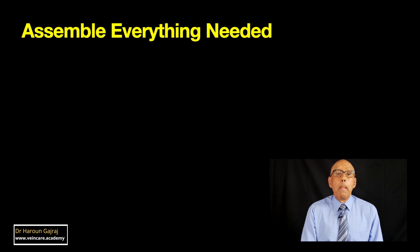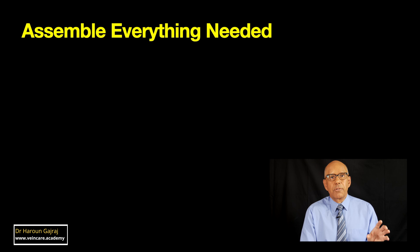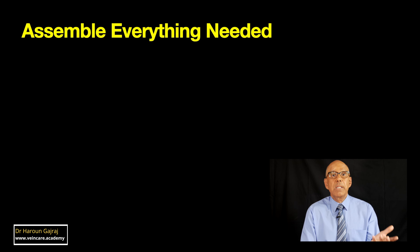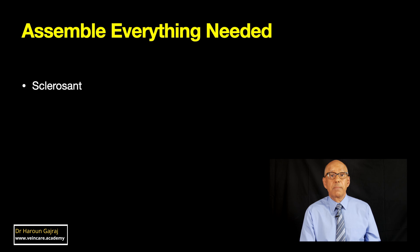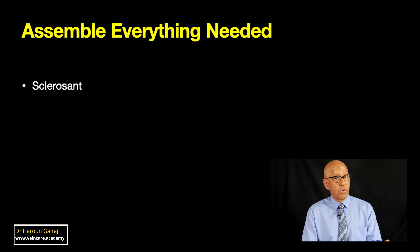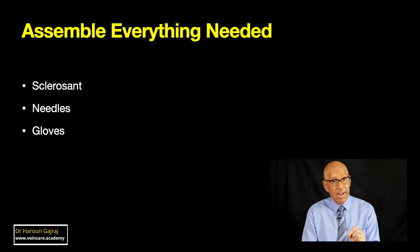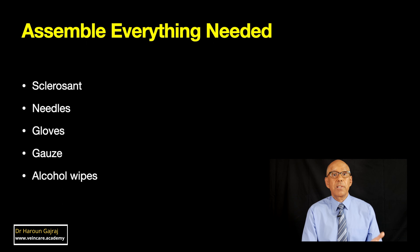Step two: when you come to the treatment day, make sure you've got everything needed. On the day of treatment, it's essential that you have all the equipment, and a checklist is really helpful. You can go through the checklist before your patient arrives and tick all the items off. The main items required are the sclerosant — make sure you've got the correct dilution and the correct strength — the appropriate needles, syringes, gloves, and alcohol wipes.